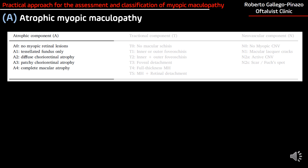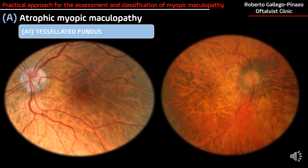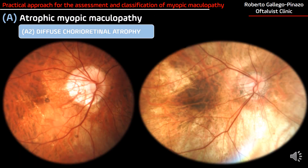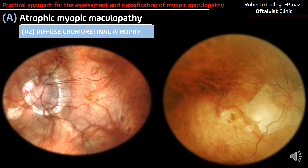First, we have the atrophic component of the myopic maculopathy, beginning with no evidence of retinal lesions, followed by the presence of tessellated fundus — which is the most frequent atrophic change in patients with myopia. Eventually, these patients can develop diffuse chorio-retinal atrophy, consistent with the presence of yellowish-orange lesions, particularly around the optic nerve or more widespread in the evolution of one particular patient.